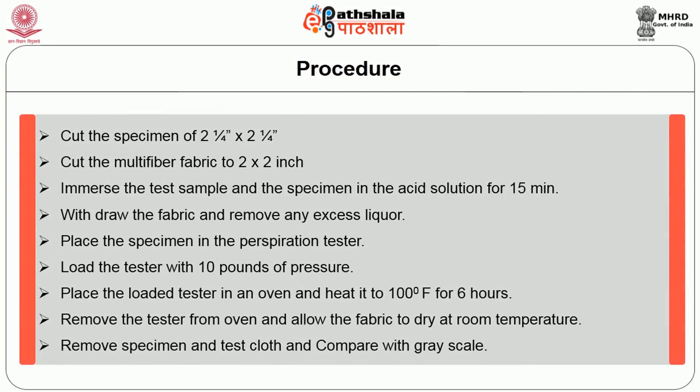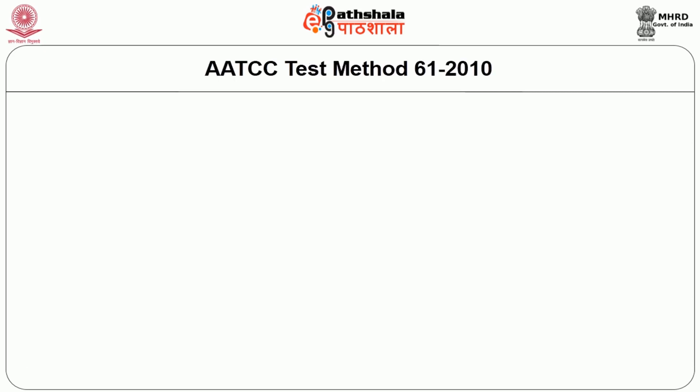The simple procedure: cut the specimen to 2.25 x 2.25 inches and cut the multi-fiber fabric to 2 x 2 inches. Immerse the test sample in acid solution for 15 minutes, withdraw the fabric, and remove any excess liquid. Place the specimen on the tester and load with 10 pounds of pressure. Place the loaded tester in an oven at 100 degrees Fahrenheit for 6 hours, then remove the specimen, dry at room temperature, and compare with the grayscale. This method is prescribed by AATCC Method 61, developed in 2010.